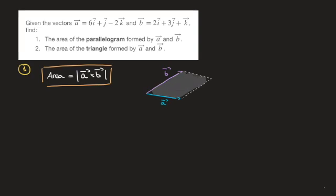We've already seen that if we calculate the vector product or cross product a cross b, the result is another vector which is perpendicular to both a and b — I'm drawing that now in orange. What the formula is actually telling us is that the area of this gray parallelogram is equal to the magnitude, or the length, of this orange vector. So the first thing we'll do is calculate the cross product.